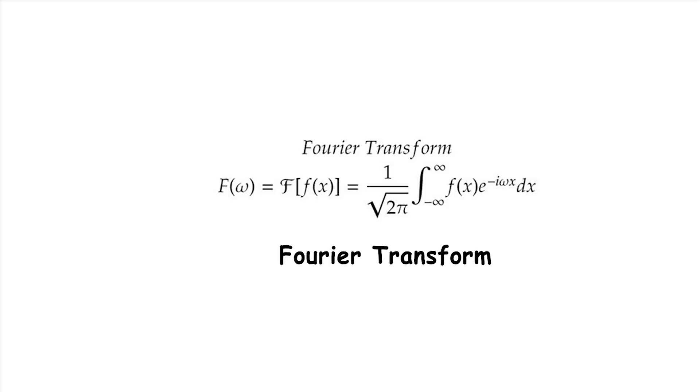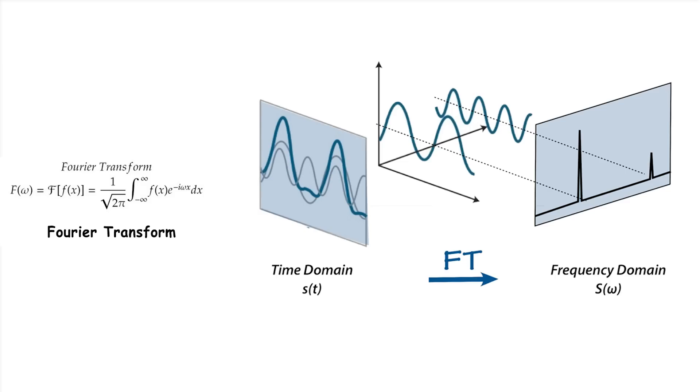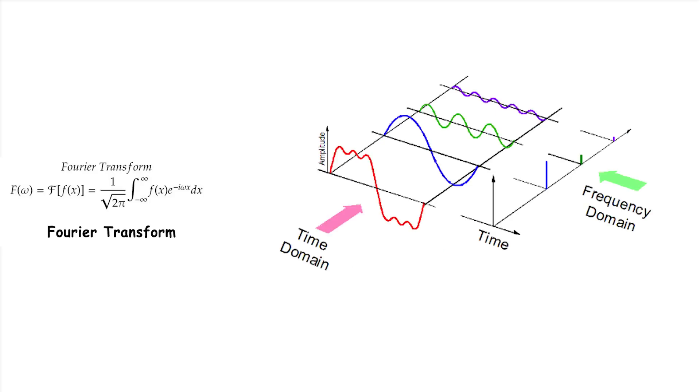Fourier Transform. The Fourier transform is a mathematical technique that transforms a function of time, a signal, into a function of frequency. This means it takes a complex signal and breaks it down into its basic building blocks: simple waves with different frequencies. It's widely used in signal processing, like analyzing sound waves or processing images.